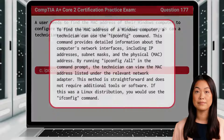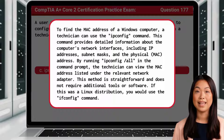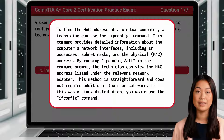ipconfig. To find the MAC address of a Windows computer, a technician can use the ipconfig command. This command provides detailed information about the computer's network interfaces, including IP addresses, subnet masks, and the physical MAC address. By running ipconfig /all in the command prompt, the technician can view the MAC address listed under the relevant network adapter. This method is straightforward and does not require additional tools or software. If this was a Linux distribution, you would use the ifconfig command.